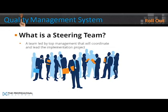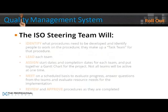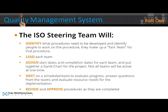What is a steering team? It's the team led by top management that will coordinate and lead the implementation project. The ISO steering team will identify what procedures need to be developed and identify people to work on each procedure — they make up the task team. They lead each team, assign start and completion dates, and put together a Gantt chart for the project. Not all teams will be active at one time. They meet on a scheduled basis to evaluate progress, answer questions from the teams, evaluate resources needed, and review and approve procedures as they are completed.